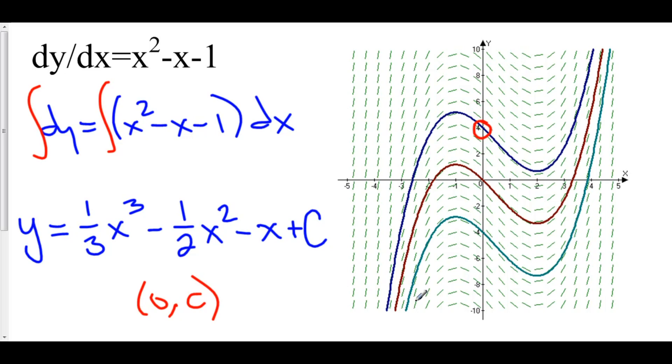There are an infinite number of possibilities for what my particular solution of this differential equation could be. Which is why we called the solution, or the antiderivative, a family of antiderivatives. This C represents that family.